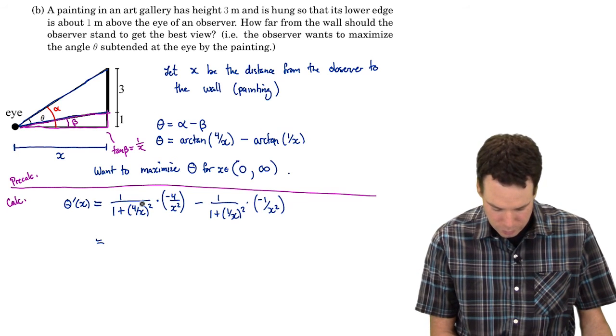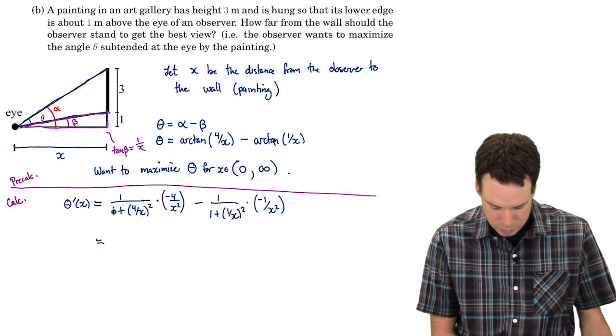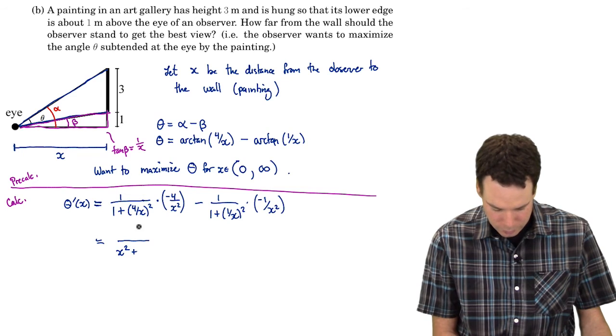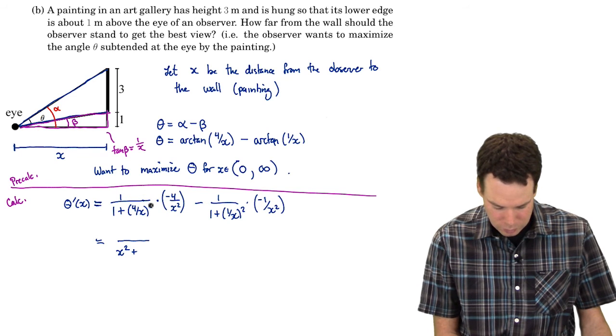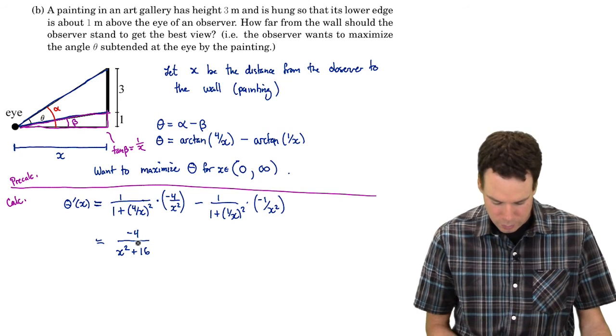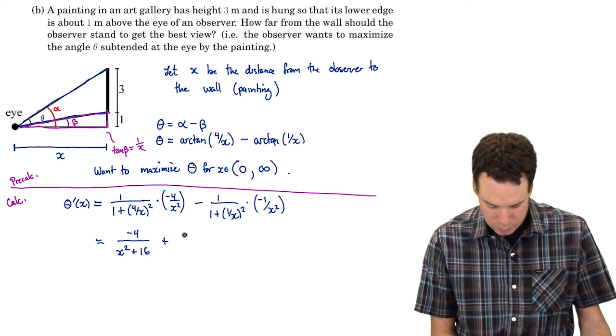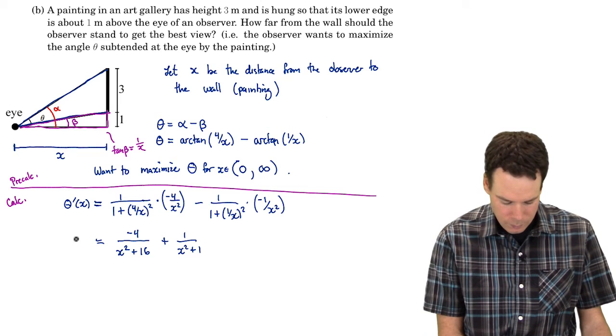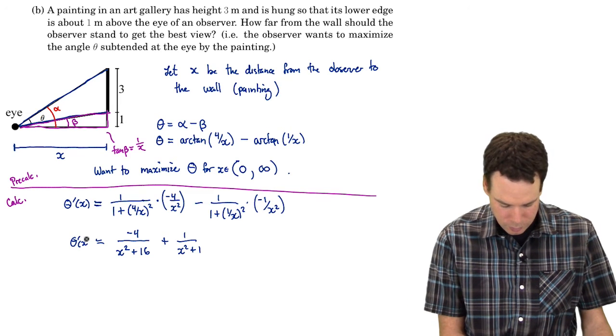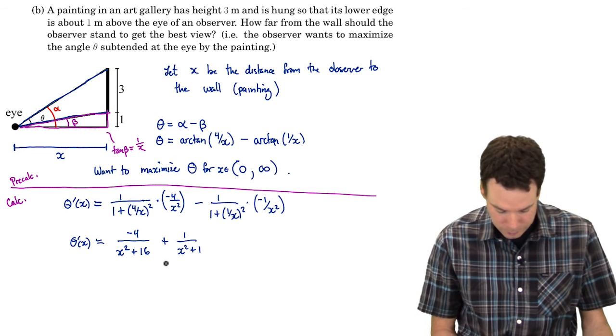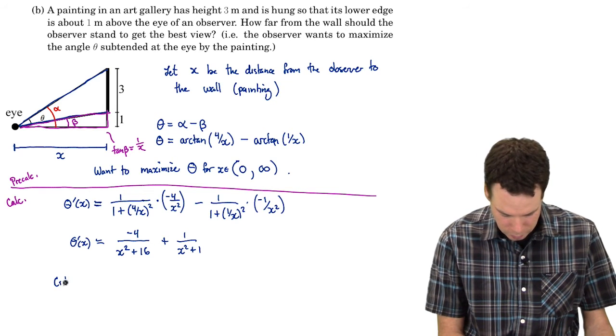So now we're going to want to set this thing equal to 0. But before we do that we should try to simplify it a little bit. I can multiply these two ratios. X squared gets multiplied to everything in the bottom. So that becomes an X squared plus 16 over X squared times X squared. So the X squared is going to cancel and I'll be left with a 16 on the bottom and a negative 4 on the top. And then I get a plus 1 over X squared plus 1. And so that's theta prime of X.